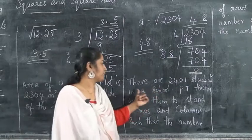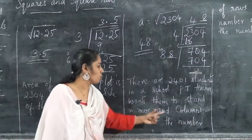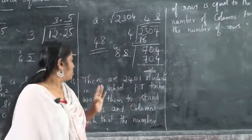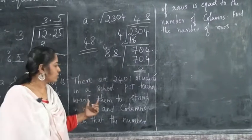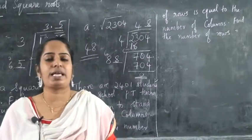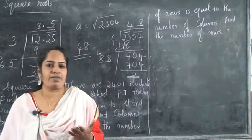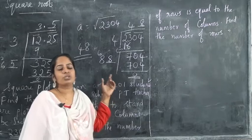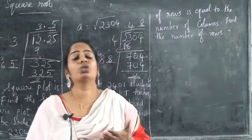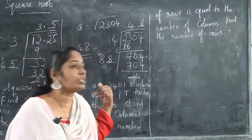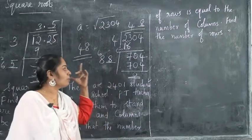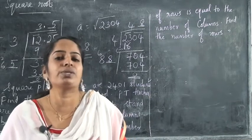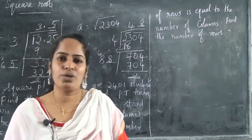So the next problem: there are 2401 students in a school. A PT teacher wants them to stand in rows and columns such that the number of rows is equal to the number of columns. Find the number of rows. We can take the row as x and the column as x as well. So x into x equals x squared. x squared is equal to 2401. So we want to find the square root of 2401. You must do this and extra questions will be there in your exercises and textbook — there are different kinds of questions, so you must prepare them. We can see you in the next class. Thank you.